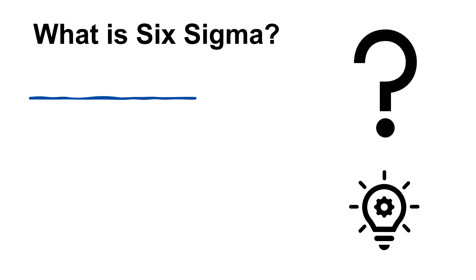So what is Six Sigma? As a performance metric, Six Sigma refers to a level of quality that is near perfection. It strives for a defect level that is no more than 3.4 parts per million. As a methodology, Six Sigma refers to the DMAIC.